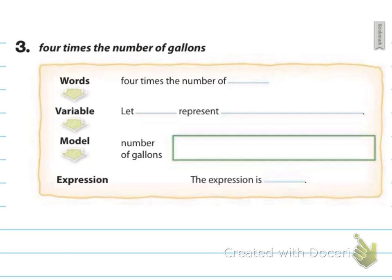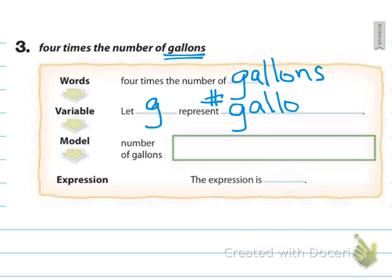Example number three says four times the number of gallons. So, in words, we've got four times the number of, fill in the blank, gallons. And it wants to let blank represent blank. Well, the thing that we don't know is the number of gallons. So, I'm going to go ahead and say let G represent the number of gallons. So, here's our diagram. And it's number of gallons four times the number of gallons. So, I'm going to say, here's gallons, gallons, and gallons because it's four times that amount. So, the expression is four times G. Four times G is my expression here.